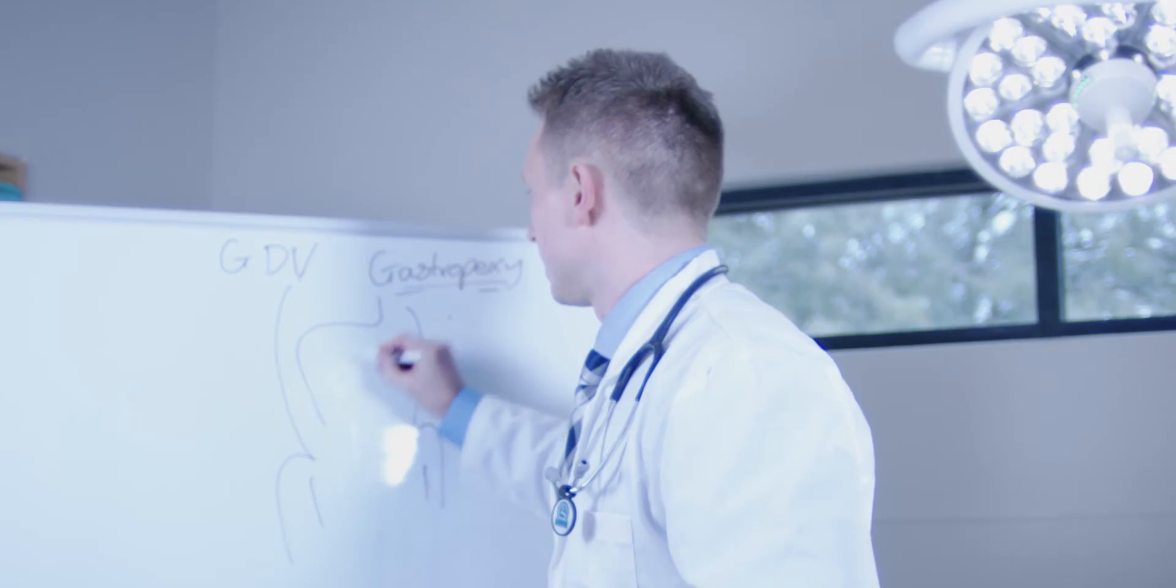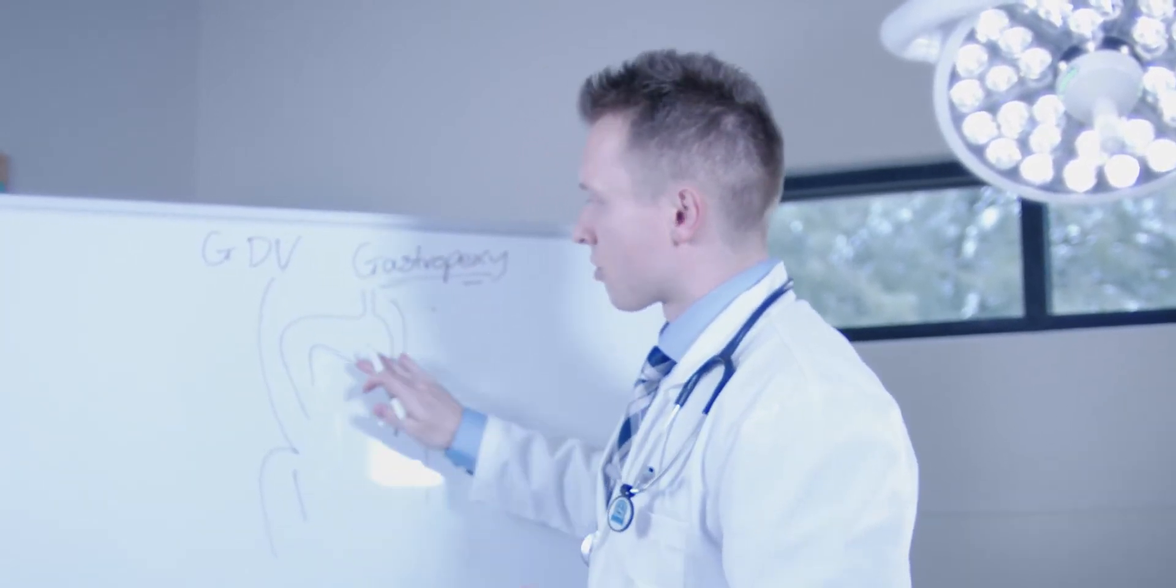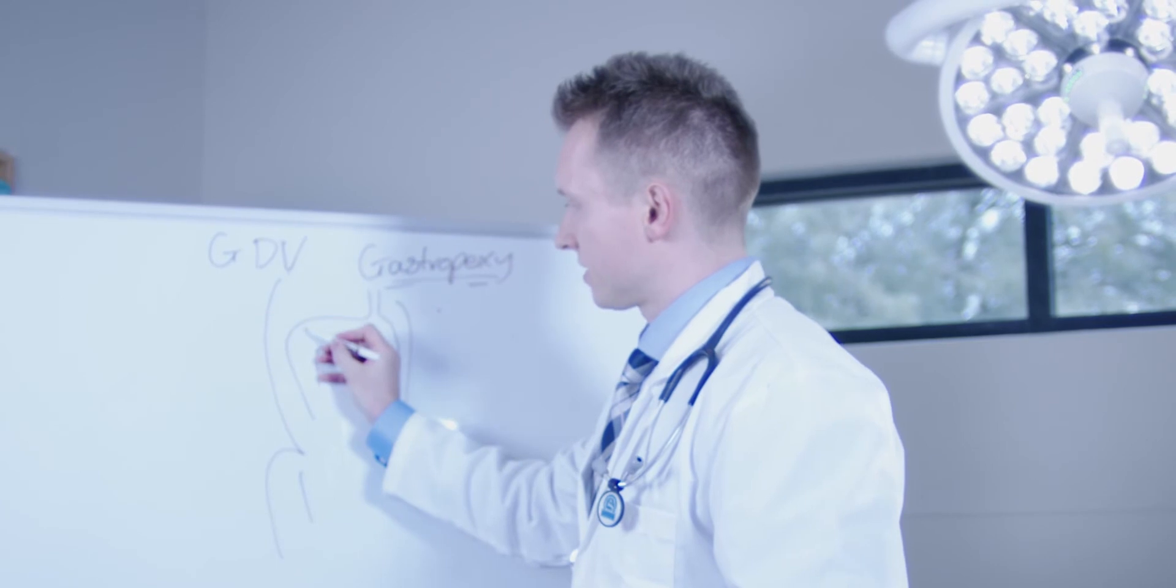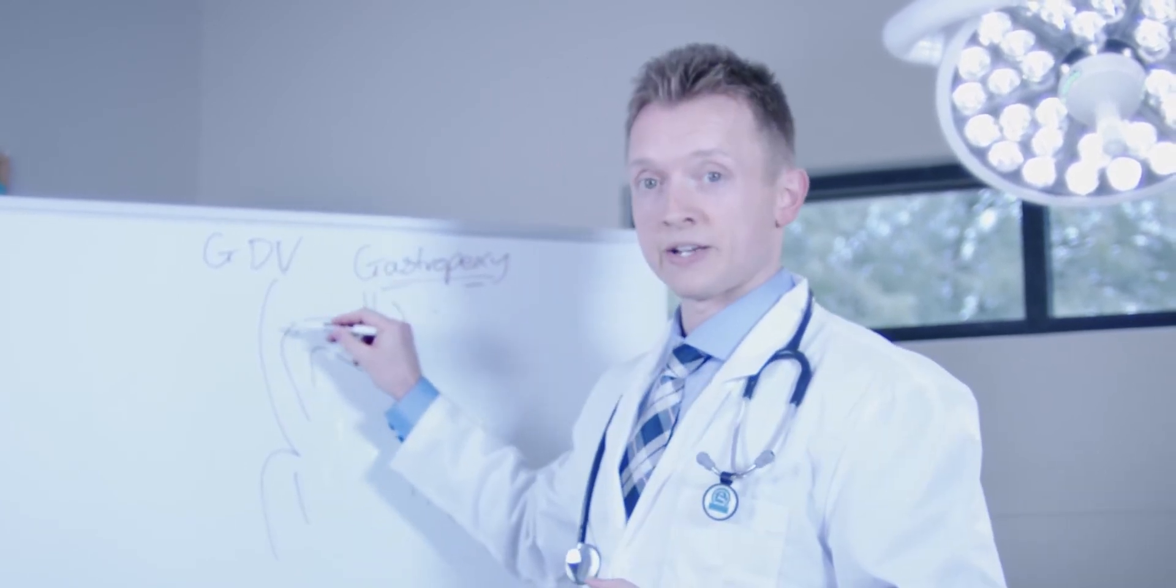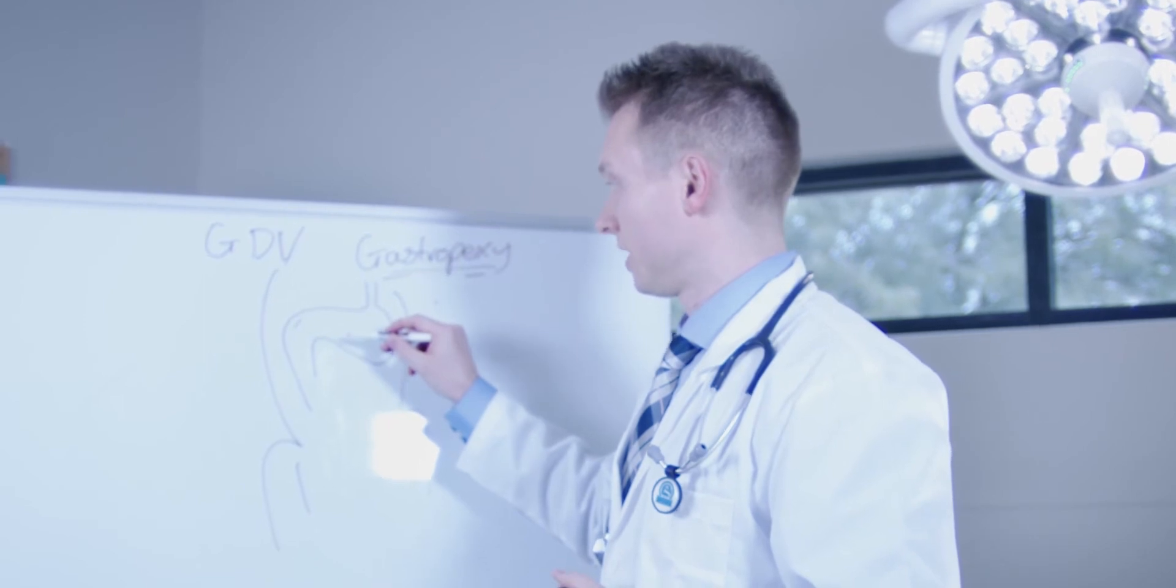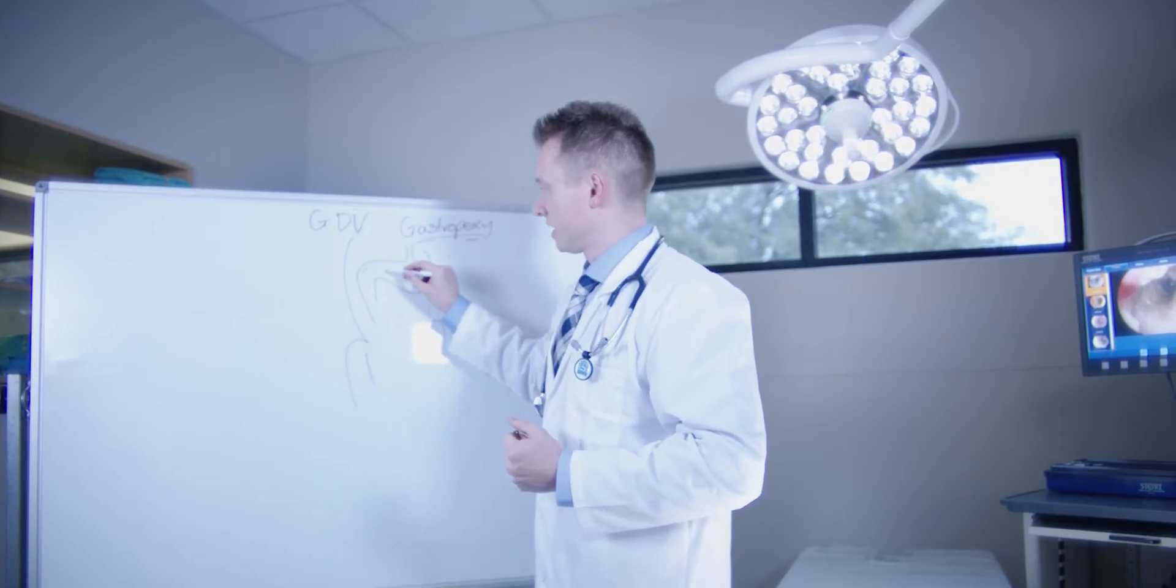So if a dog is laying on their back and that's the normal position of the stomach, a gastropexy involves creating a permanent adhesion between the right side of the stomach and the muscle on the right side of the body wall. And that's usually achieved by suturing the muscle of the stomach to the muscle of the body wall.